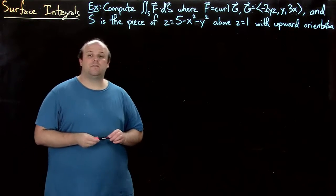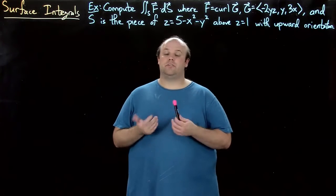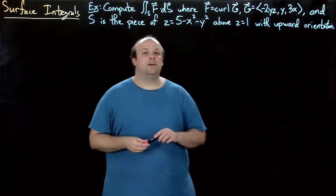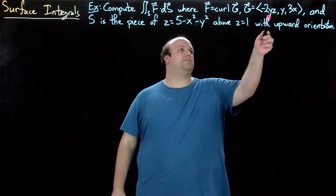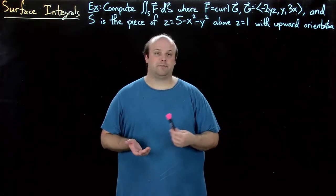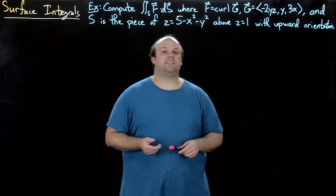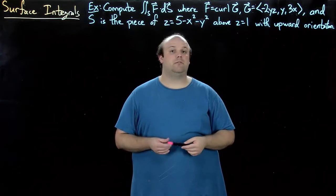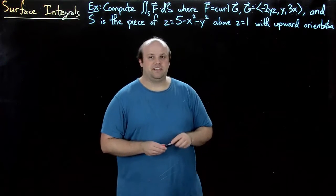Let's finish off this section on surface integrals by doing one more example. We're going to compute the flux integral of f across s, where f is the curl of this vector field g, which is ⟨-2yz, y, 3x⟩, and s is the piece of the paraboloid z = 5 - x² - y², which sits above the plane z = 1, with upward orientation.